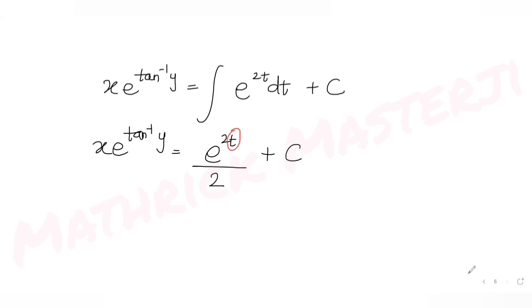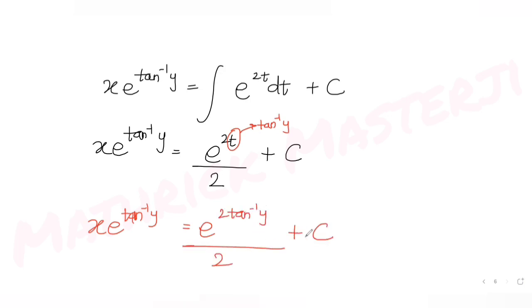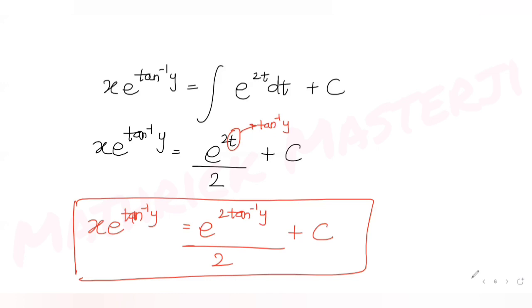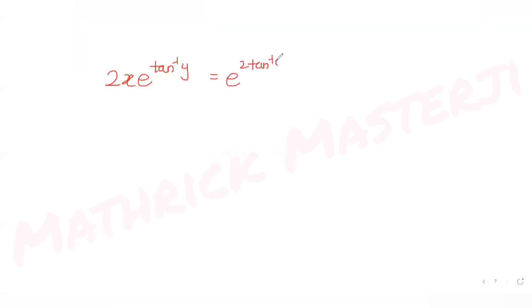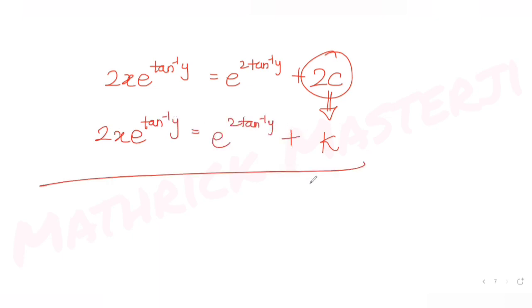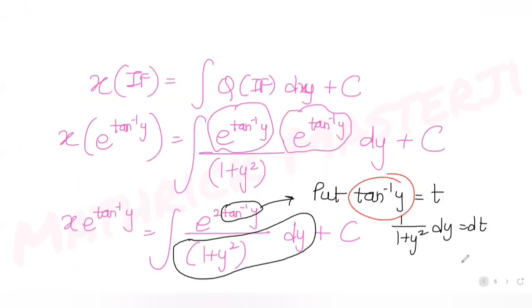Resubstituting t = tan⁻¹y gives x·e^(tan⁻¹y) = e^(2tan⁻¹y)/2 + c. Since none of the answer choices have a denominator of 2, we multiply throughout by 2: 2x·e^(tan⁻¹y) = e^(2tan⁻¹y) + 2c. Since 2c is still a constant, we write it as k.